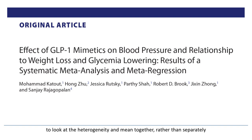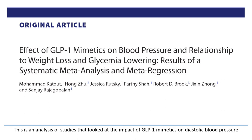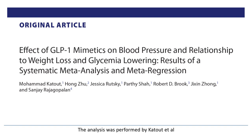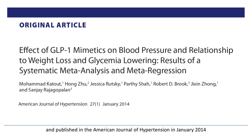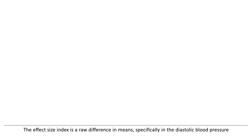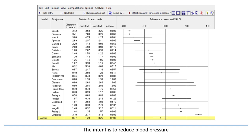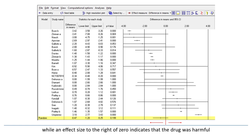I'll show one example of why it's important to look at the heterogeneity and mean together rather than separately. This is an analysis of studies that looked at the impact of GLP-1 mimetics on diastolic blood pressure. The analysis was performed by Katoot et al. and published in the American Journal of Hypertension in January 2014. The effect size index is a raw difference in means, specifically in the diastolic blood pressure. The intent is to reduce blood pressure, so an effect size to the left of 0 indicates that the drug was helpful, while an effect size to the right of 0 indicates that the drug was harmful.